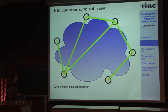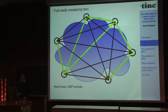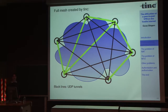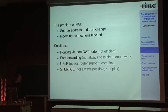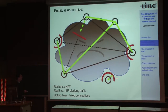Tinc exchanges information between nodes about where everybody is and creates direct connections for each node to every other node. It uses connectionless UDP for this, which is efficient and scales well even with 100 or more nodes. But the reality on the internet is not so nice. There are network address translators, which are very common, where outgoing connections work but incoming connections fail. Some ISPs also block certain traffic, for example UDP or only allowing port 80.